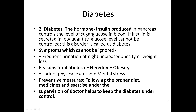Diabetes. The hormone insulin produced in the pancreas controls the level of sugar glucose in the blood. If insulin is secreted in low quantity, glucose level cannot be controlled. This disorder is called diabetes.